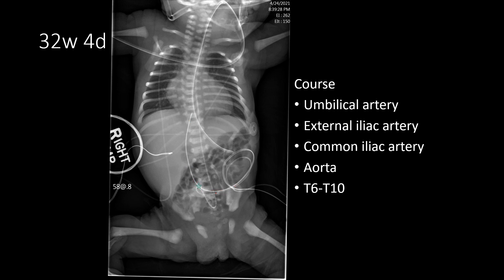So again we see the umbilicus here with both catheters converging. The umbilical arterial catheter courses down into the pelvis and then along the left side of the spine, while the umbilical venous catheter courses along the right side of the spine and has a smoother entry.